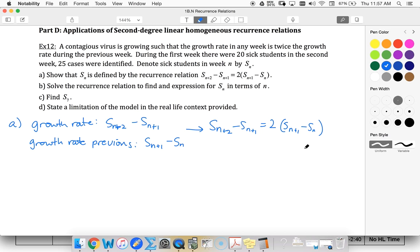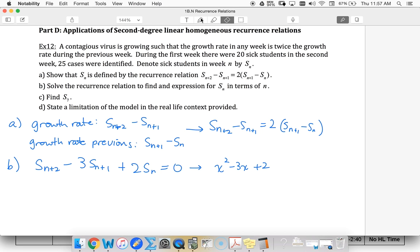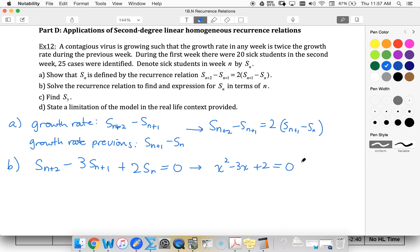All right, so now we can rearrange this. When I rearrange this, I'm going to end up getting S sub N plus two minus three S sub N plus one plus two S sub N is zero. My auxiliary equation is then X squared minus three X plus two, that of course factors into X minus two, X minus one. So X is one or two.